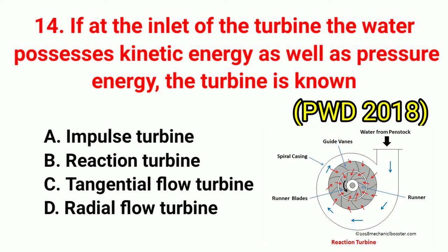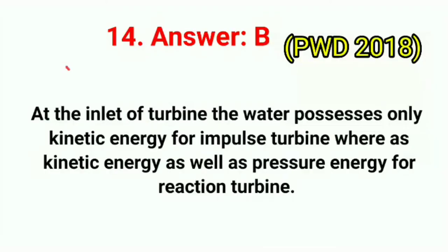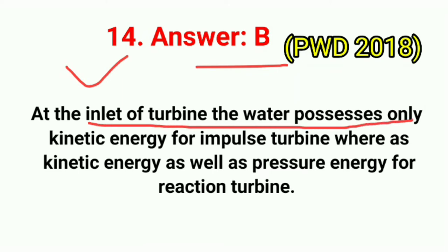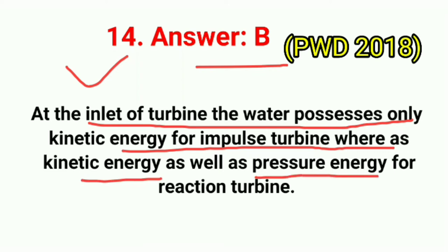Question No. 14. If at the inlet of the turbine the water possesses kinetic energy as well as pressure energy, the turbine is known as? Correct answer is option B: reaction turbine. At the inlet of a turbine, water possesses only kinetic energy for an impulse turbine, whereas kinetic energy as well as pressure energy for a reaction turbine.